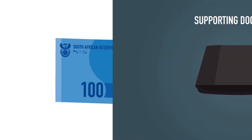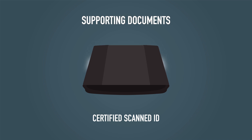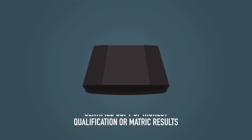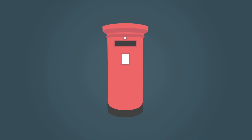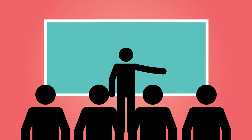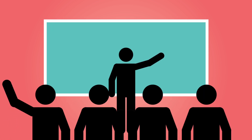Now you need to send a certified scanned copy of your ID document and certified copy of your highest qualification or your matric results. Certification can be done at your local police station or post office. Also upload a character reference letter. This is best written by someone who isn't a parent, like a boss, a teacher or someone else who has good community standing.